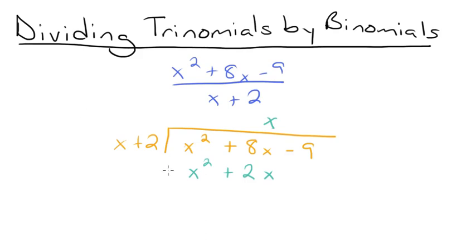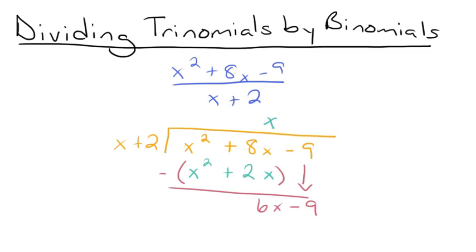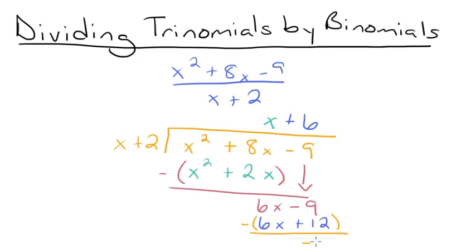Now we're going to subtract our expressions. This will give us 8x minus 2x is 6x, because x squared minus x squared is 0, so those terms cancel out. Then we're going to bring down our minus 9. Now we want to see how many times x goes into 6x. x goes into 6x 6 times, because x times 6 is 6x, so we write plus 6 right here. Then we multiply 6 by x plus 2, which gives us 6x plus 12, and then we subtract these two expressions. 6x minus 6x is 0, and negative 9 minus 12 is negative 21.